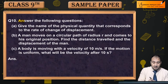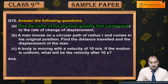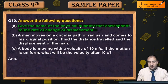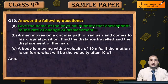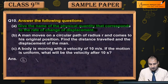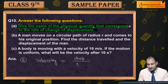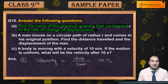Now see question 10 — answer the following questions. Give the name of the physical quantity that corresponds to the rate of change of displacement. Rate of change of displacement क्या होती है, क्या quantity होती है — तो this quantity is known as velocity. Velocity is nothing but rate of change of displacement, that is displacement upon time. And unit क्या होगी — meter per second. तो meter per second इसकी unit होती है।